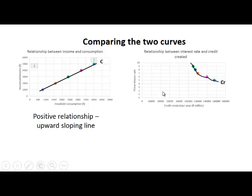Then we looked at the relationship between interest rate and credit created. We showed the prime interest rate on the vertical axis and credit created on the horizontal axis. This curve has a negative relationship - it is downward sloping because the amount of credit created per year decreases when the prime interest rate increases.